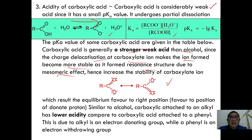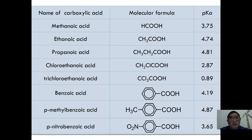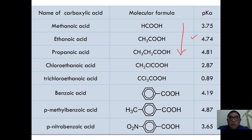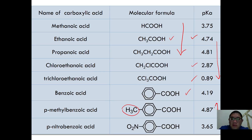Carboxylic acids attached to an alkyl group have lower acidity compared to those attached to a phenyl group (benzoic acid). This is because most alkyl groups are electron-donating while phenyl is electron-withdrawing. Going down the homologous series, the pKa value increases, showing weaker acidity. Comparing ethanoic acid to chloroethanoic acid and trichloroethanoic acid, the pKa decreases. Benzoic acid is a stronger acid than ethanoic acid; adding CH₃ increases pKa (weaker acid), while NO₂ decreases pKa (stronger acid).